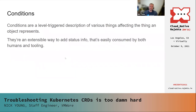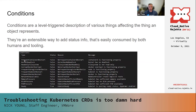That's all stuff you need to know but it's not a state the object is in — it's an important property as a result of the request you've made in the spec. Contrast that with conditions, which are a level-triggered description of various things affecting what an object represents. They're an extensible way to add status info easily consumed by both humans and tooling. Looking at the Node object as an example, you've got conditions like kernel deadlock, read-only file system, memory pressure, disk pressure, and PID pressure — all states where someone probably needs to do something. The Ready condition is a good example of what we call a positive polarity condition.